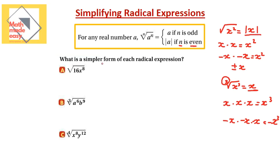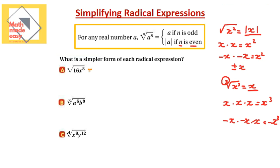Let's apply this rule to our questions. For the first question, I want the square root of 16x to the power of 8. The square root of 16 is 4 — that's a number so we take the principal root only. For x to the power of 8, its square root is x to the power of 4, because x⁴ times x⁴ gives x⁸. Because this is an even index, we put the variable part inside an absolute value.